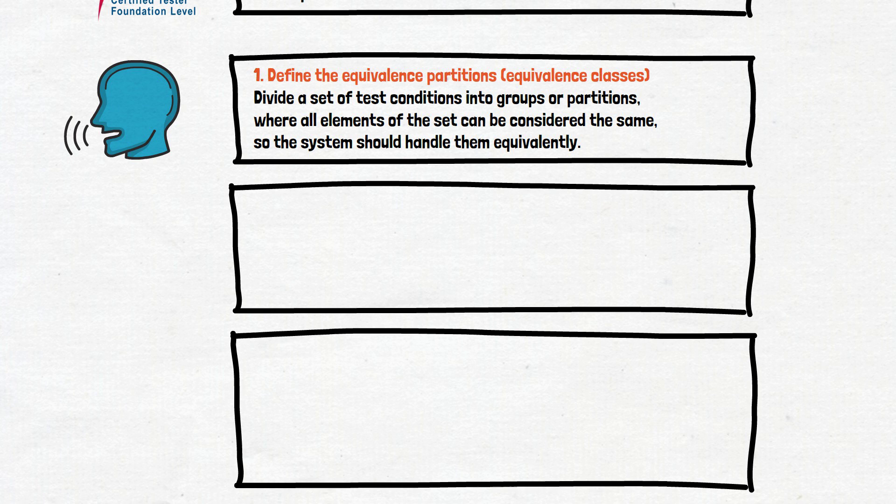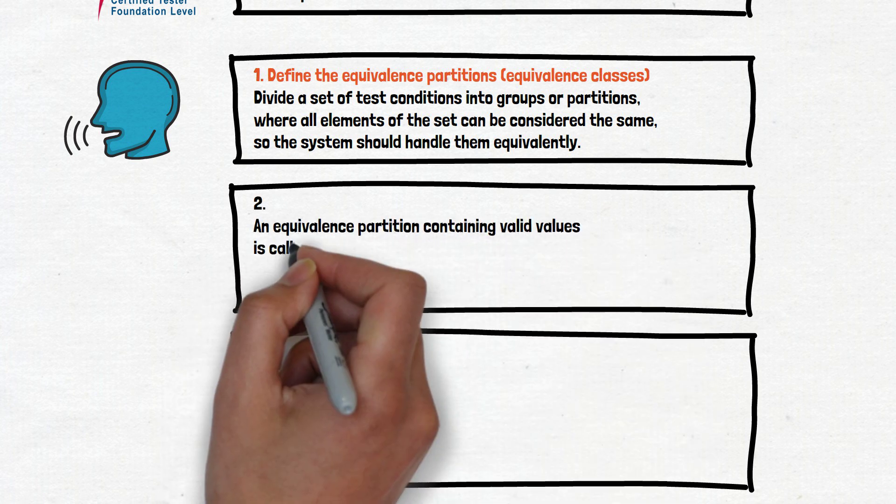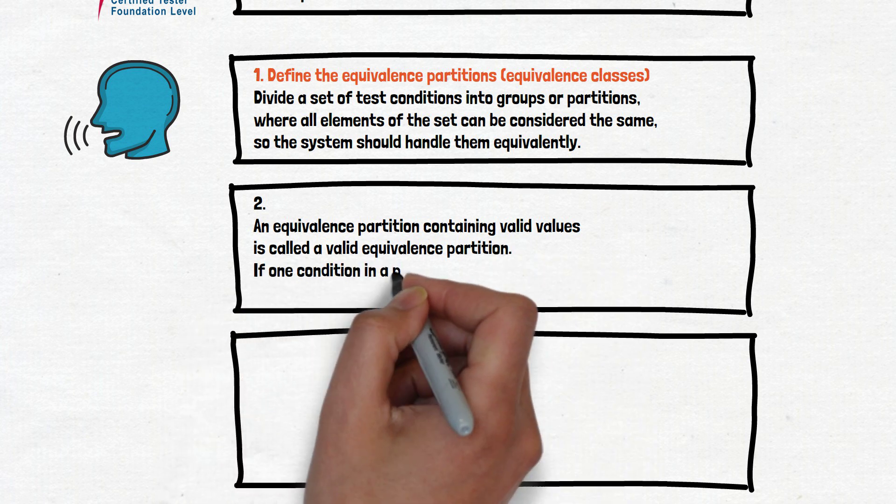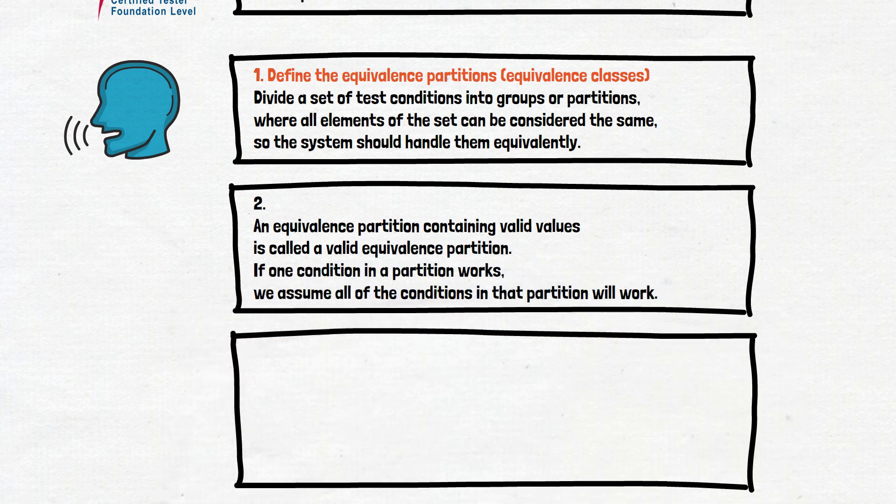Let's check two more simple rules related to the technique. Step number two. An equivalence partitioning containing valid values is called a valid equivalence partition. If one condition in a partition works, we assume all of the conditions in that partition will work.